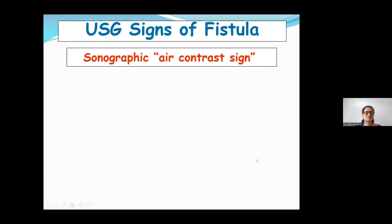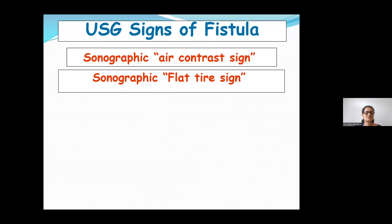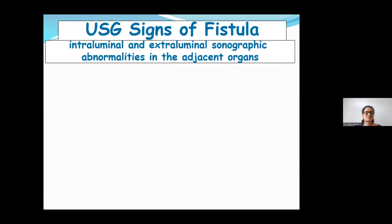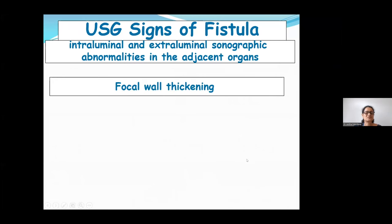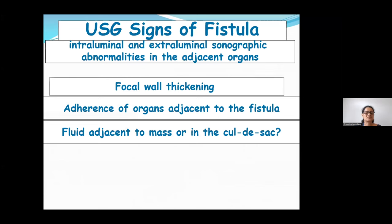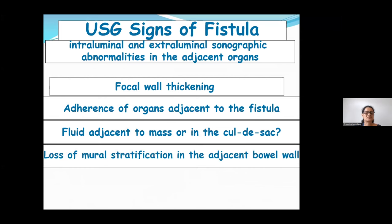Signs of fistula on ultrasound include: the sonographic air contrast sign, the sonographic flat tire sign, and presence of ring-down artifacts. Additionally, we should look for focal wall thickening of involved organs, adherence of organs to each other, fluid adjacent to a mass or in the cul-de-sac, loss of mural stratification in adjacent bladder wall, bowel wall thickening, omental thickening, lymphadenopathy, ascites, or metastatic lesions.